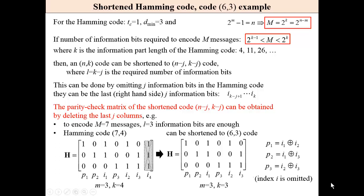Shortened Hamming code. For the regular Hamming code, we have this equality: number of messages, source messages, is equal to 2 to the power of k.